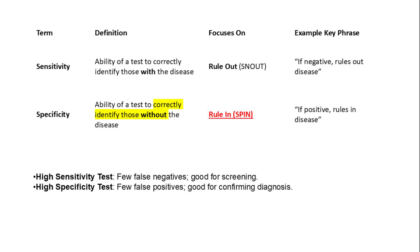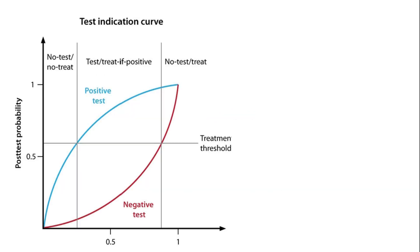On the other hand, specificity refers to the ability of a test to correctly identify those without the disease. A test with high specificity is most useful for ruling in a disease when the result is positive, remembered by the acronym SPIN: specificity, positive, rules in.